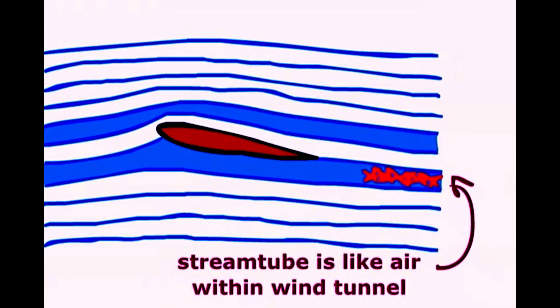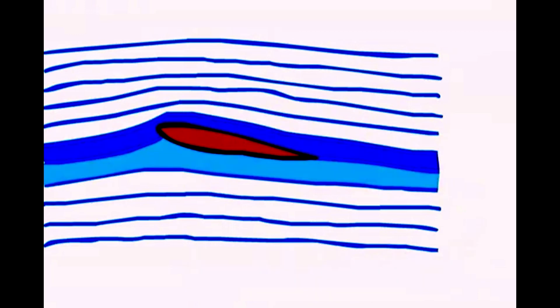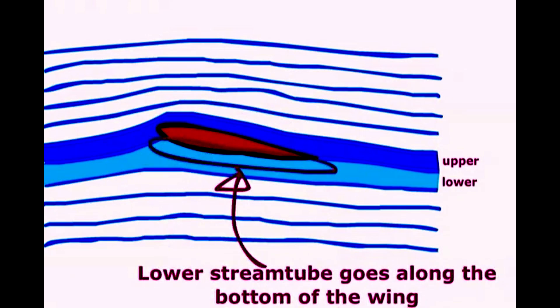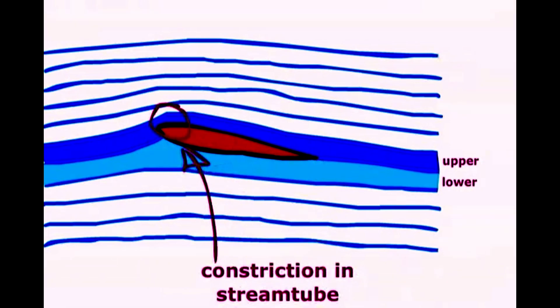You can see that the upper stream tube is constricted at the leading edge of the wing, and you remember what happens when there is a narrow part of a wind tunnel. The air speeds up. Along the bottom, the stream tube actually opens out a little, and the air will actually slow down. So we now know that a wing has faster moving air on top of it and slower moving air underneath it. How does that create lift though?